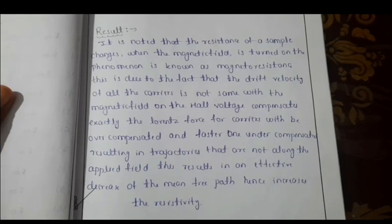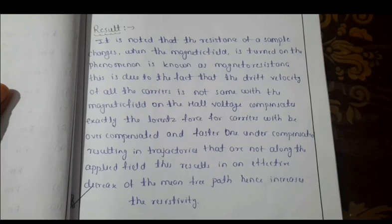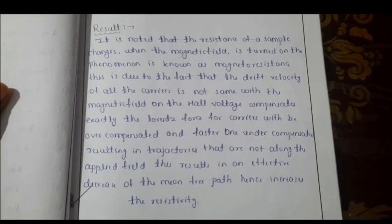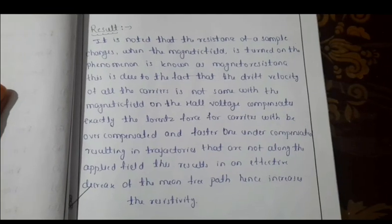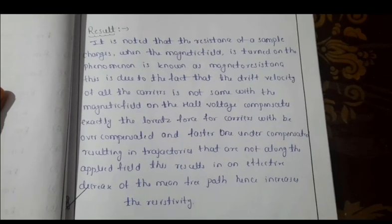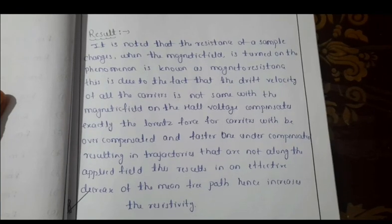compensated and faster ones under-compensated. Resulting in trajectories that are not along the applied field, this results in an effective decrease of the mean free path, hence increases the resistivity.